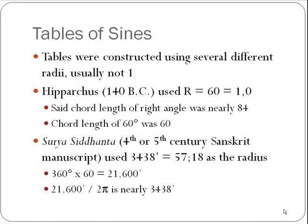Tables of sine were constructed using several different radii, and usually not one. That's because early on, mathematicians didn't want to deal with small parts — decimals were not invented, and sexagesimals were very difficult to work with, so they used larger radii. Hipparchus, in 140 BC, used a radius of 60, or in sexagesimal notation, 1,0. He said that the chord length for a right angle was nearly 84. You might look back at an assignment where you used a radius of 60 millimeters, and the chord length for a right angle should be somewhere close to 84 millimeters.